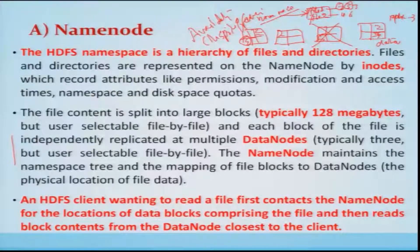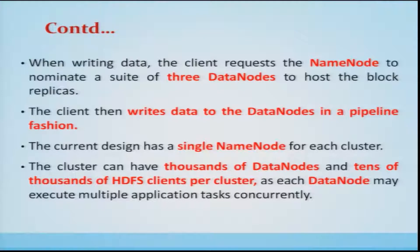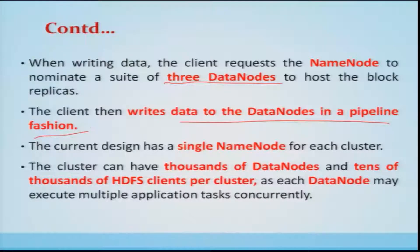Once the client contacts the NameNode, it learns the file block locations and addresses of the DataNodes. The client then contacts the DataNodes directly and accesses the file data in the form of data blocks. When writing data, the client requests the NameNode to nominate a set of three DataNodes to host the block replicas. The client then writes the data directly to the DataNodes in a pipeline fashion — pushing the data along three DataNodes in a single write operation.